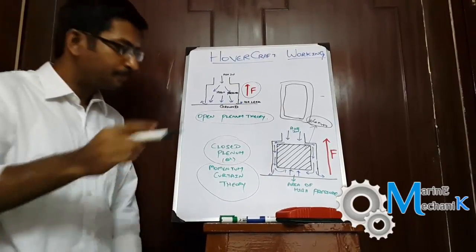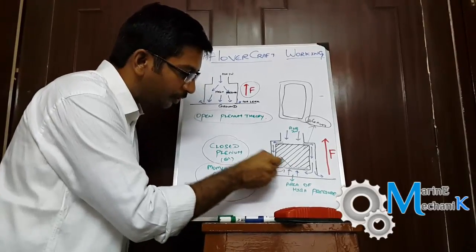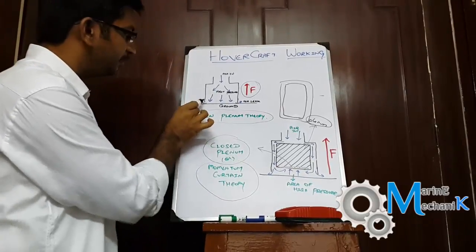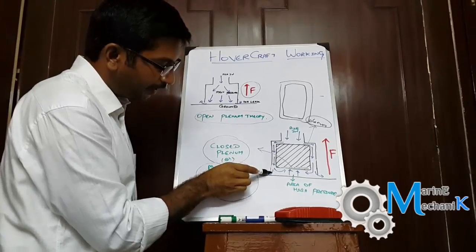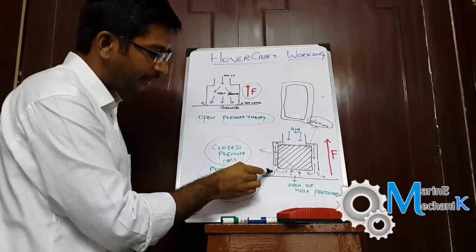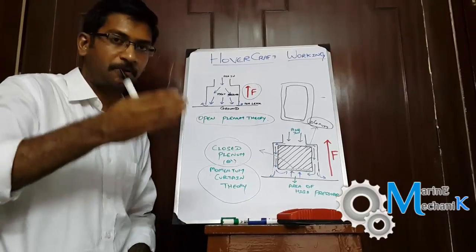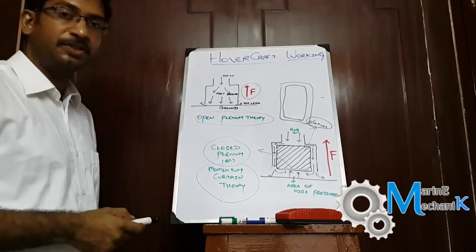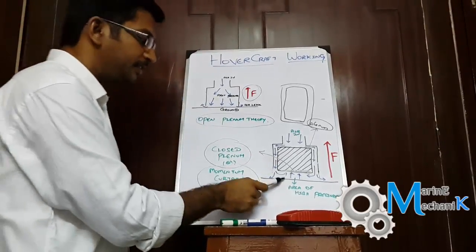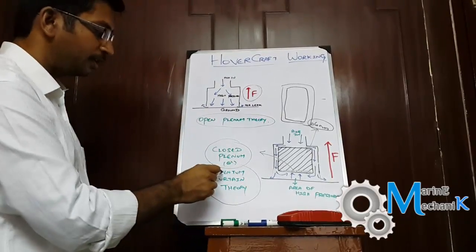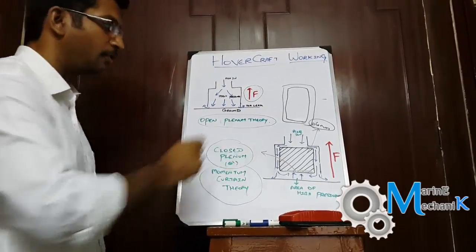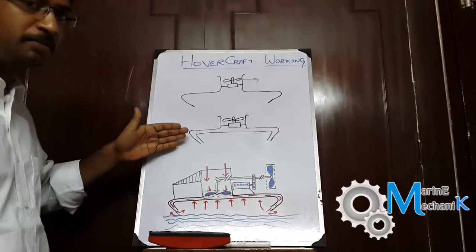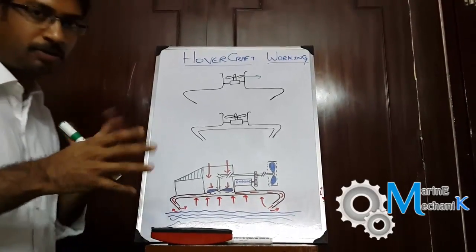The amount of air escaping is controlled by the amount of skirt attached—that is, the rubber projection which is extended well below the plenum. This controls the amount of air escaping out and this levitates more than the open plenum. This is called the momentum curtain theory of a hovercraft. The previous diagram showed the open plenum and the closed plenum or momentum curtain theory principle.